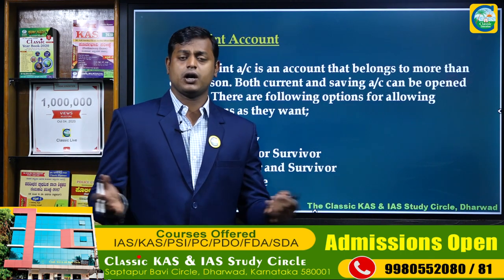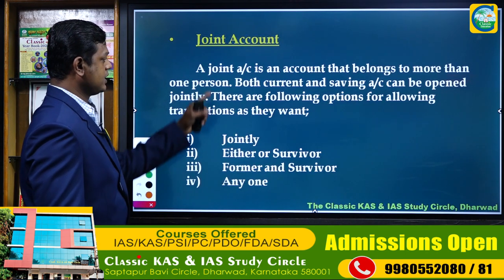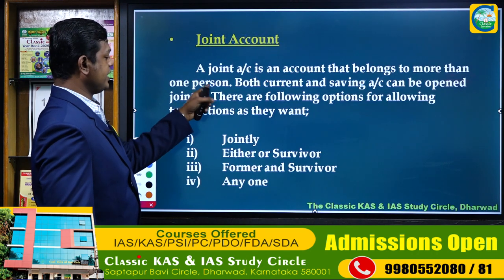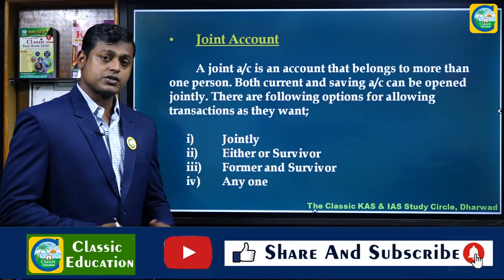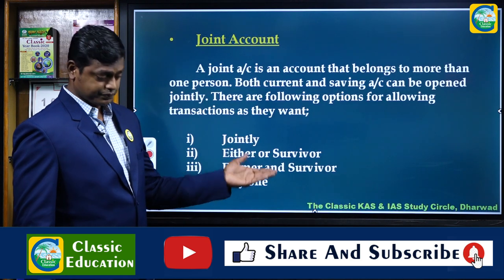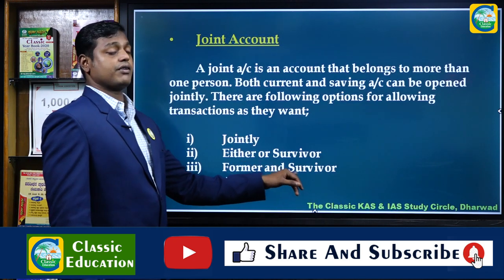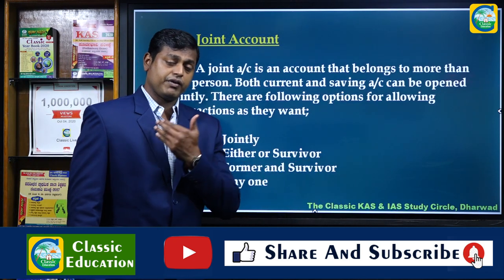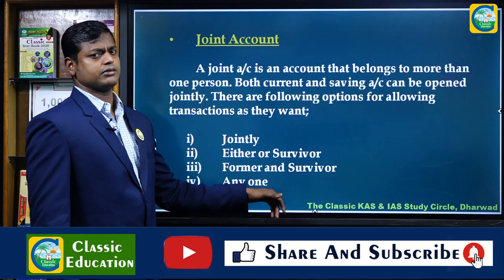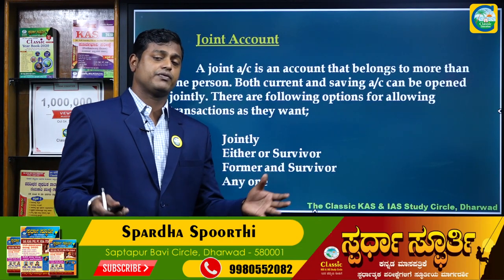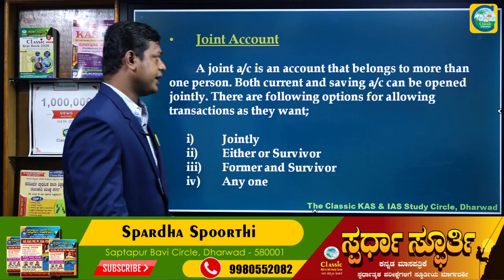The options for a joint account are: first, jointly — more than one person operates together; second, either or survivor — any one of the account holders can operate; third, former or survivor — the primary account holder operates first, and the survivor has access after; or anyone — any person mentioned in the joint account can transact.